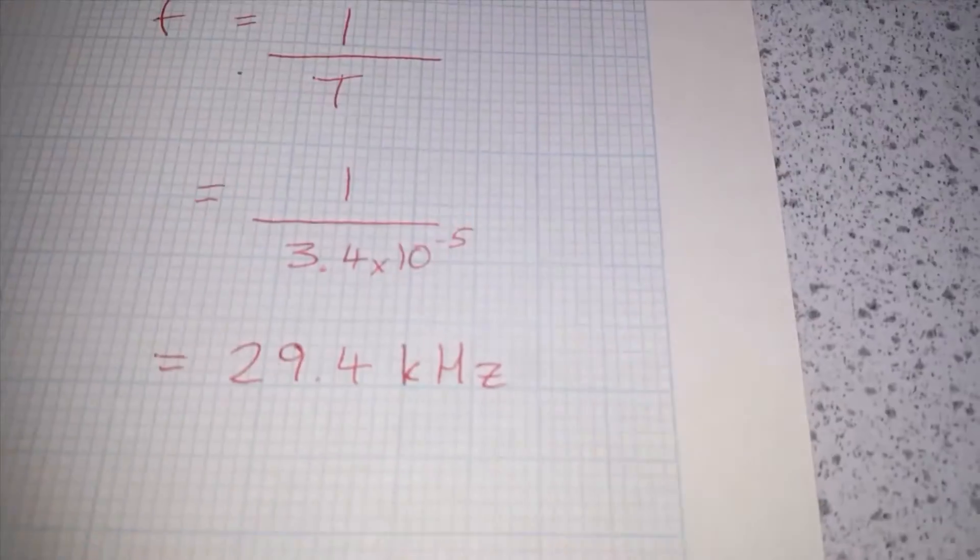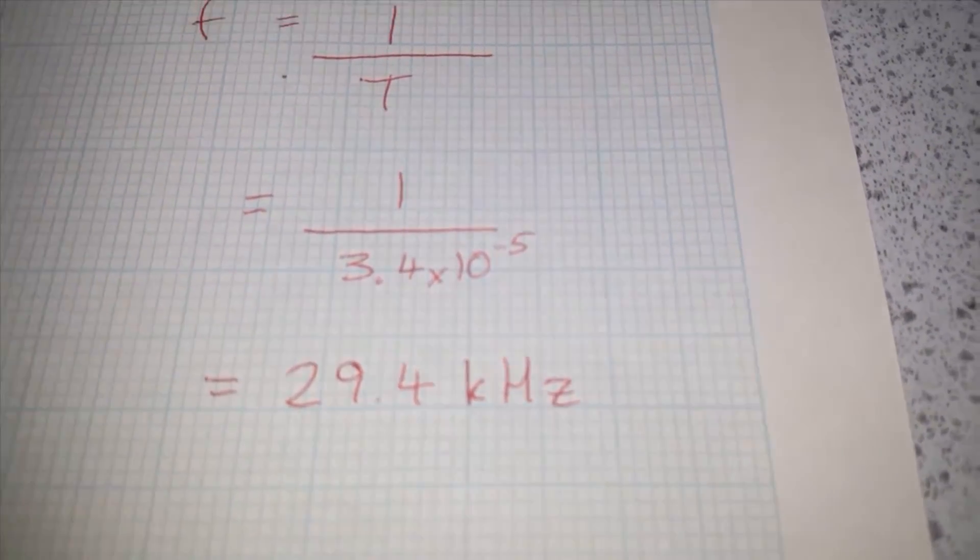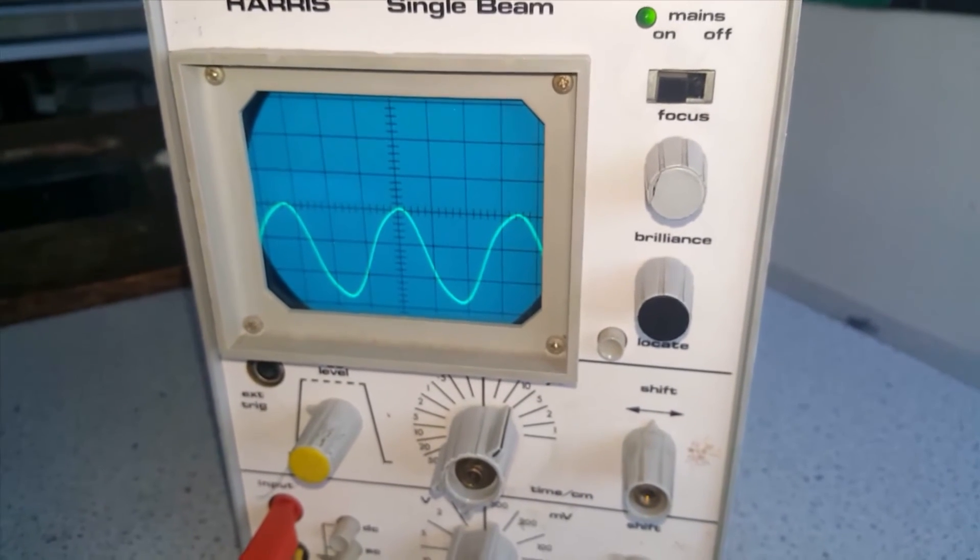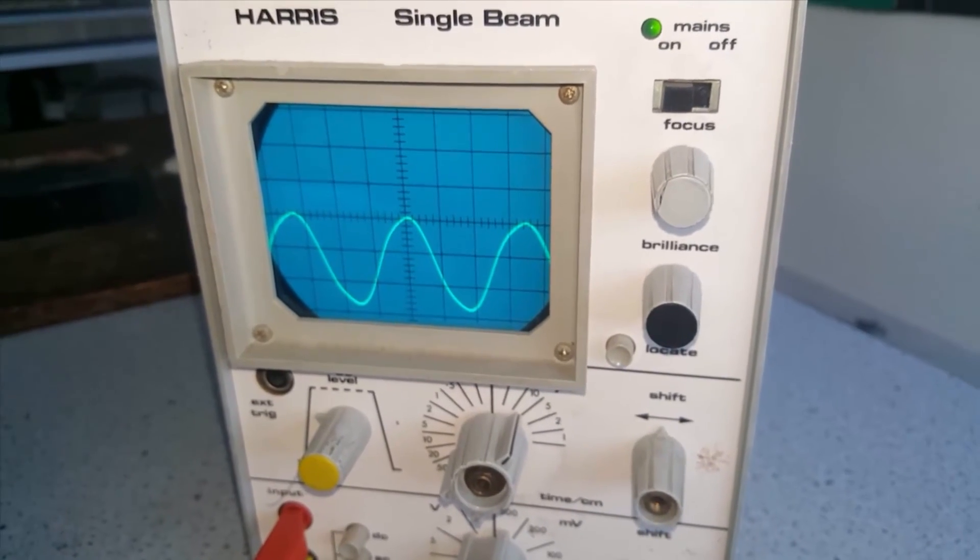According to our measurements on the oscilloscope, we have 29.4 thousand hertz, 29.4 kilohertz. So it's pretty accurate.